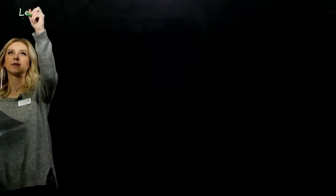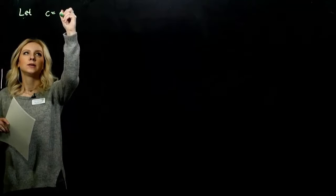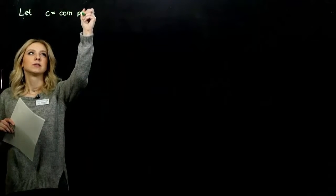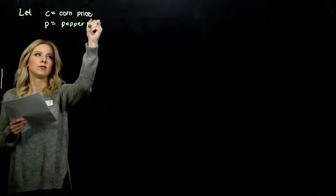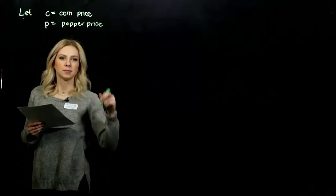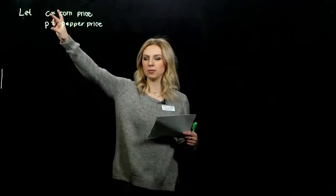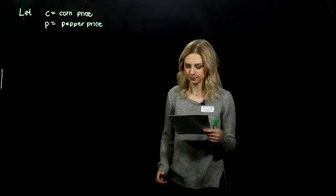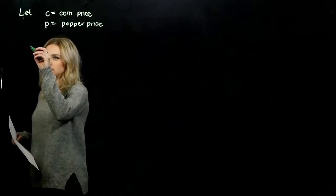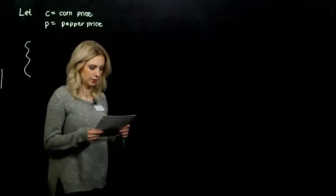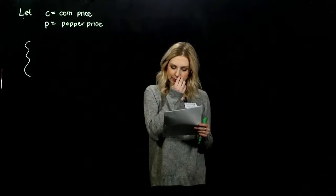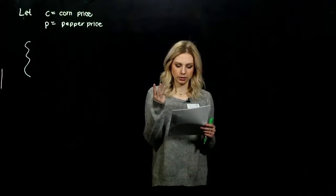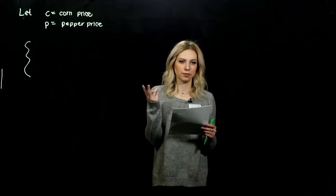So we have to build a system, solve it, and find one ear of corn and one sweet pepper. I'm going to first of all assign variables to our unknowns. That should always be our first step. I'm going to let C be the corn price and P be the pepper price.